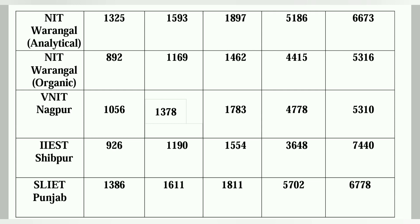IIST Shibpur का cutoff: General 926, EWS के लिए 1190 — मतलब 1200 के अंदर, OBC के लिए 1554, SC के लिए 3648, ST के लिए 7440। SLIT Punjab में General category closing rank 1386, EWS 1611, OBC 1811, SC 5700, ST around 6778।